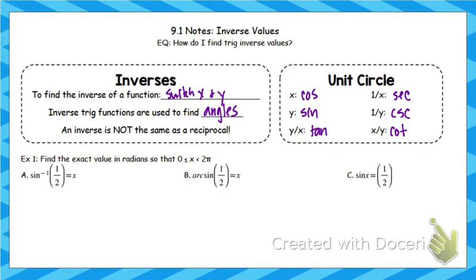What we're going to do is basically go backwards. Sine inverse of 1/2 means: the sine of what angle is 1/2? Sine is the y-coordinate, so you're going to find where there's a y-coordinate of 1/2 on your unit circle. This is going to occur in two places. Sine is positive in quadrant 1 and quadrant 2, so in quadrant 1 you find that y-coordinate of 1/2 at pi over 6, and you also find it in quadrant 2 at 5 pi over 6.